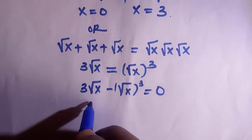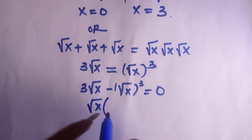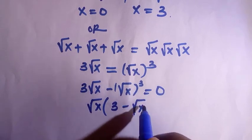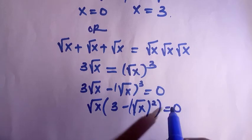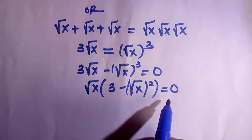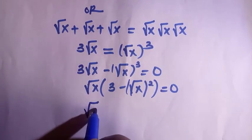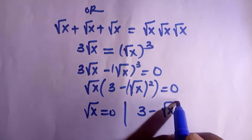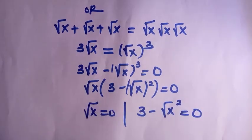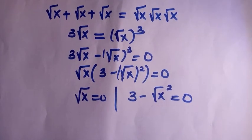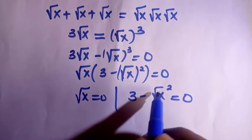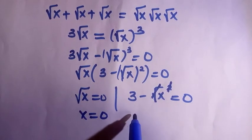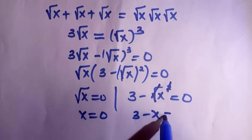Taking out one √x from 3√x − (√x)^3 = 0 gives √x(3 − (√x)^2) = 0, which simplifies to √x(3 − x) = 0. So √x = 0 giving x = 0, or 3 − x = 0 giving x = 3.